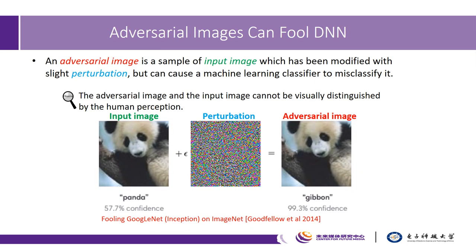Recently, adversarial attack is a popular research topic in computer vision. An adversarial image is a sample of an input image which has been modified with slight perturbation, but can cause a machine learning classifier to misclassify it. The adversarial image and the input image cannot be visually distinguished by human perception. Here is an example posted by fooling GoogleNet on ImageNet.